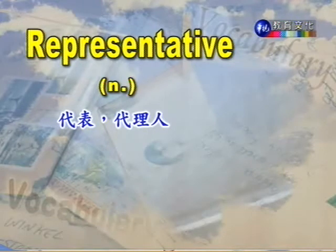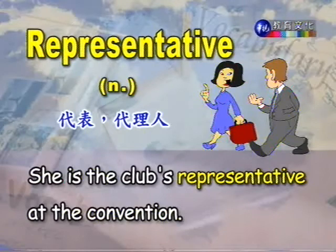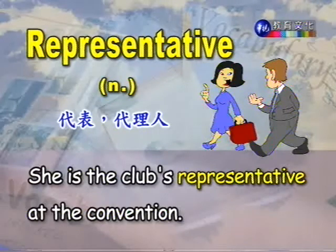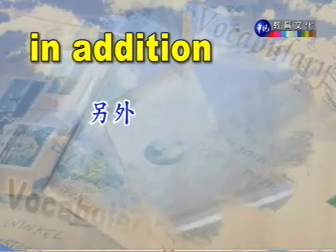我们来看第一个单字：representative，名词，代表、代理人。例句：She is the club's representative at the convention. 意思是她是这个俱乐部派来参加这个大型会议的代表。